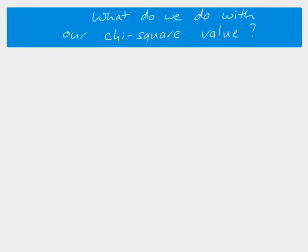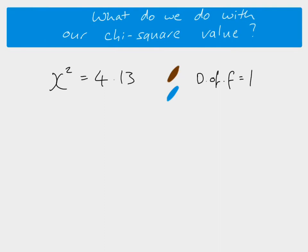Our H1 — our regular hypothesis — states that there is a significant difference. The null hypothesis H0 says there is no significant difference, and this is important when writing our conclusion. Once we have our chi-squared value from the calculation, we also need to look at something called the degrees of freedom, which is the number of categories minus one. In our blue-eyes versus brown-eyes example, we have two categories, so the degrees of freedom is one. You need this so you can look up the correct place in the statistical table.